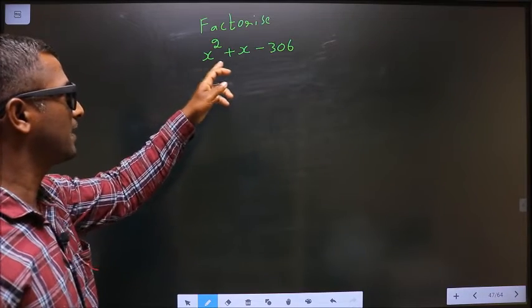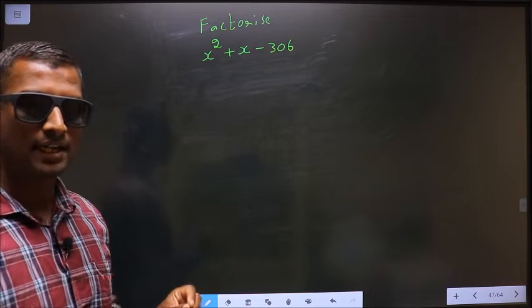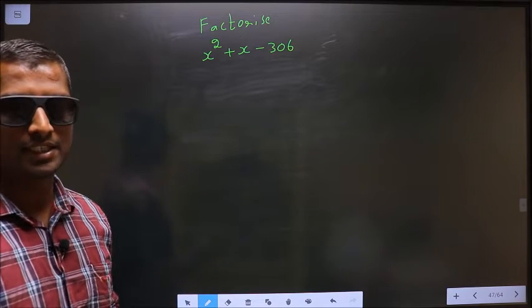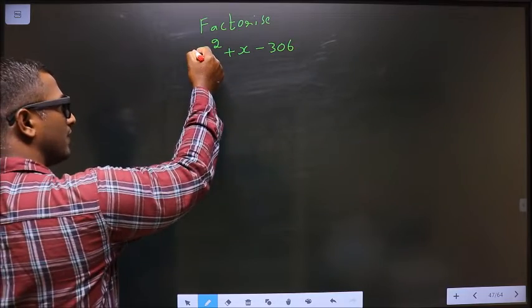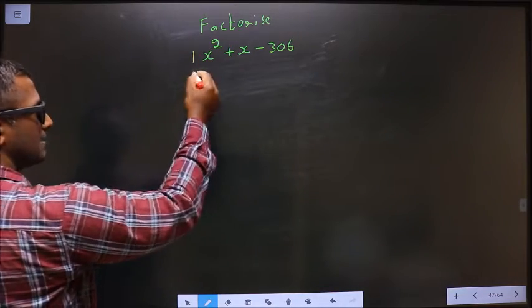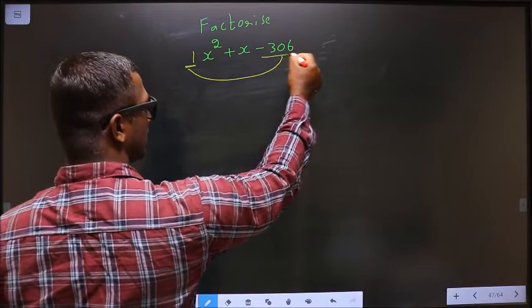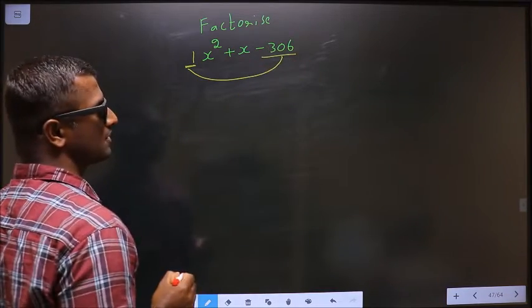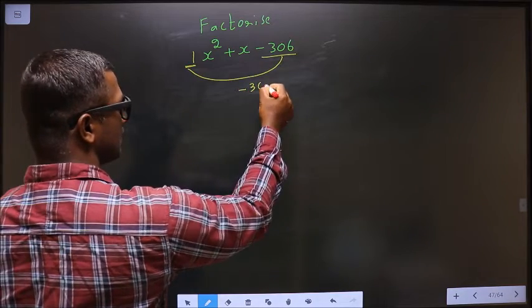Factorize x² + x - 306. To factorize any quadratic equation, Step 1: the coefficient of x² (in this case 1) should be multiplied to the constant, that is -306. So 1 × -306 = -306.